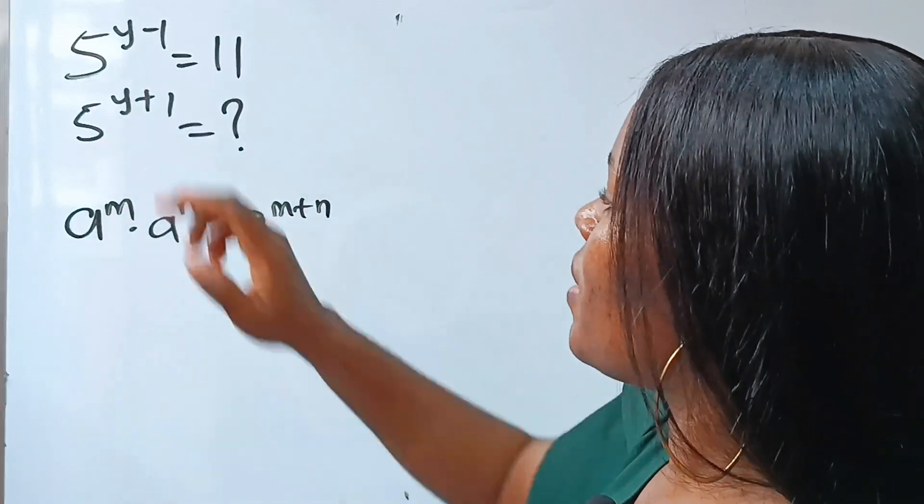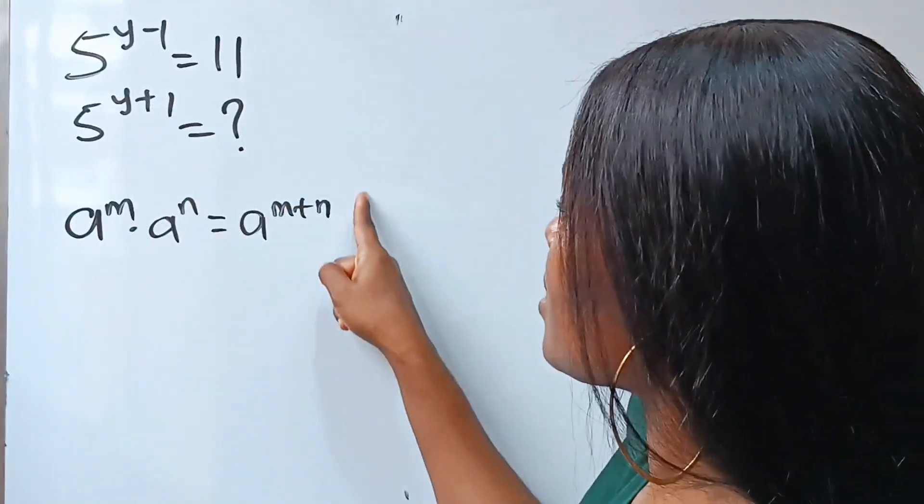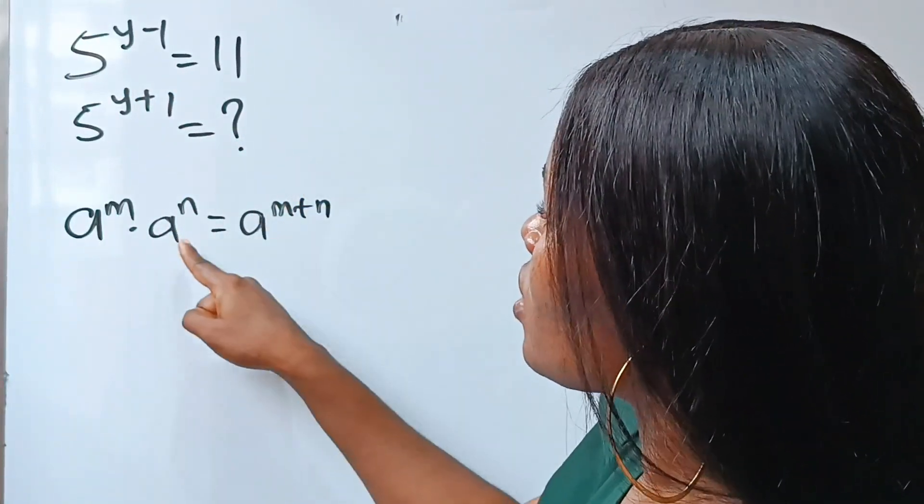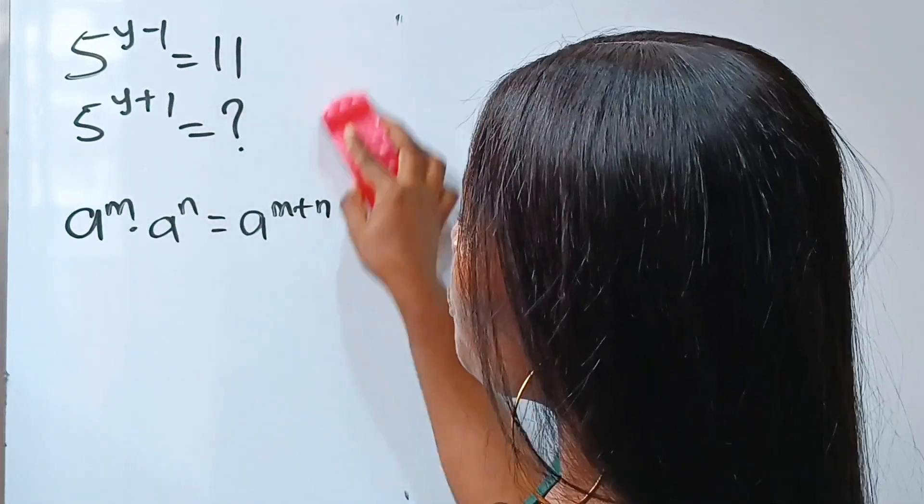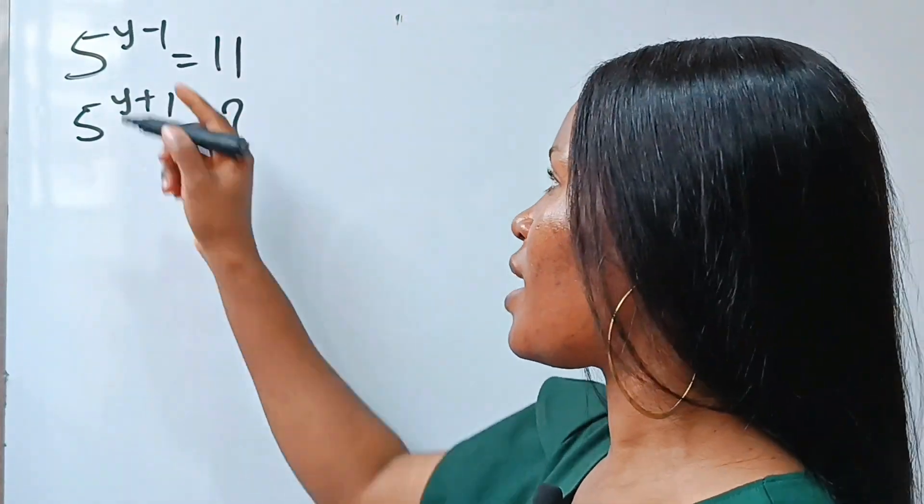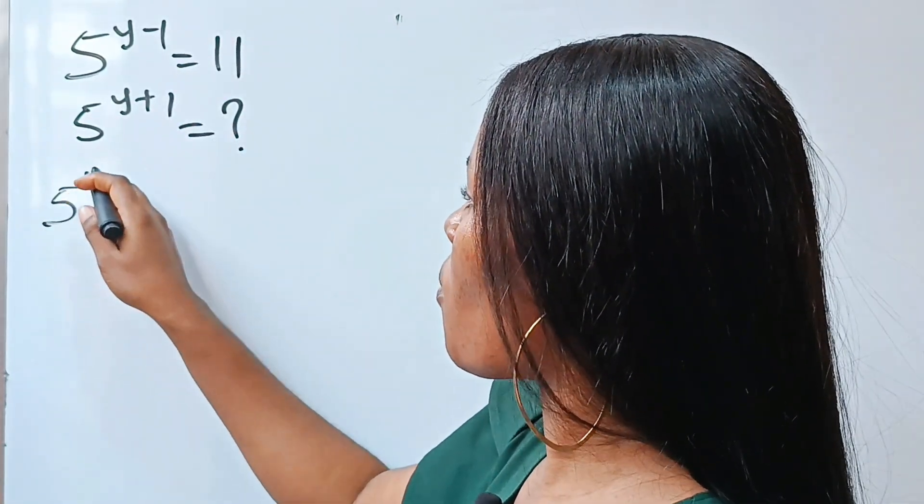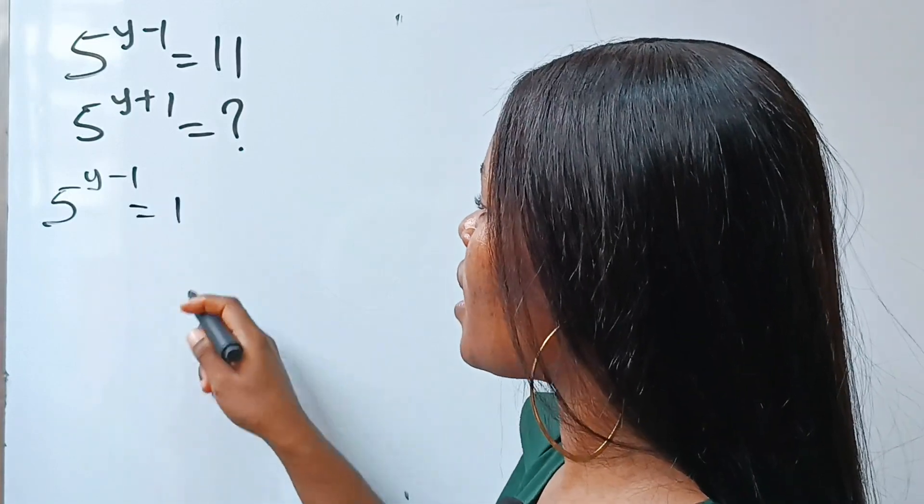We have something similar here because this is already expressed in this form. So let's split it in this form. If we do that, we have that 5 to the power of y minus 1 equals 11.